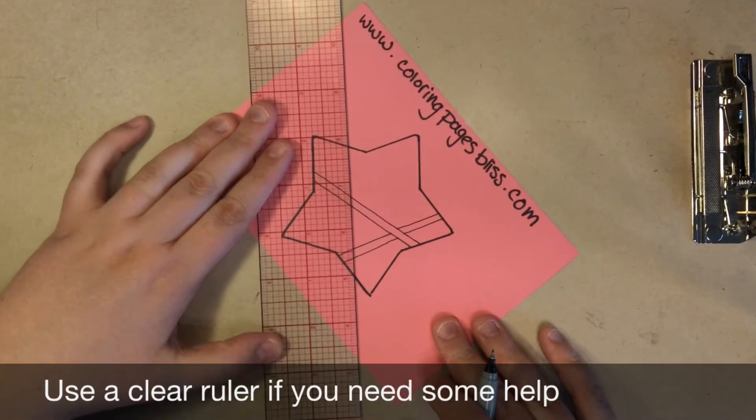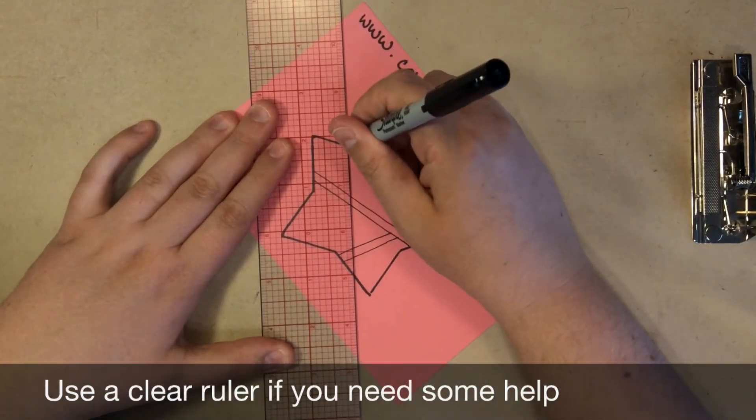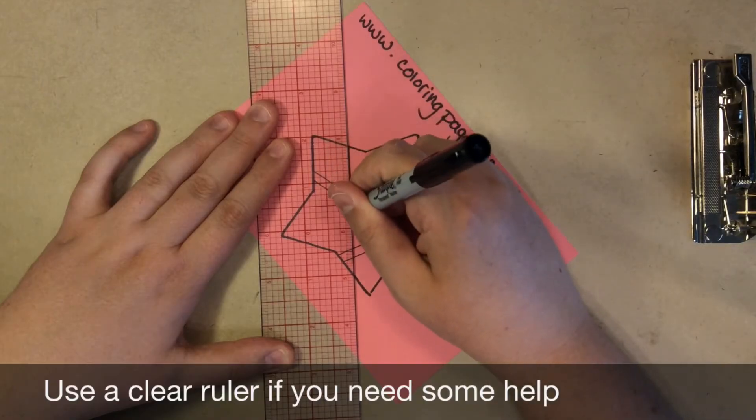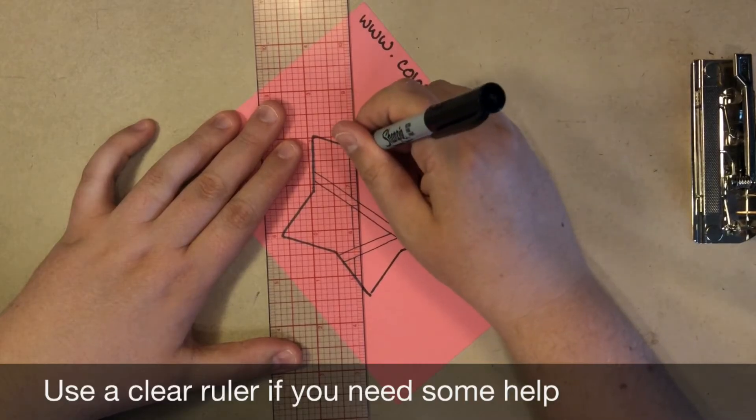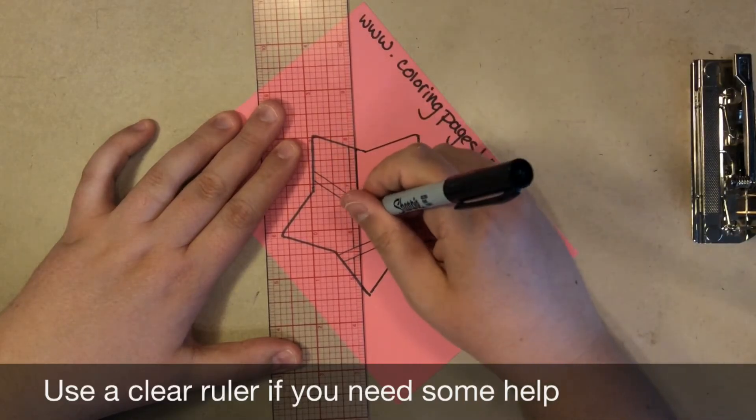If you're not comfortable with drawing straight lines, you can use a clear ruler like this one. It makes it really easy to create straight lines and you can see through the ruler so you know where to stop and start.